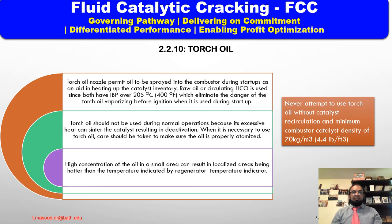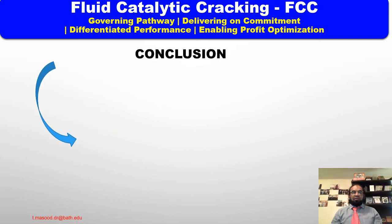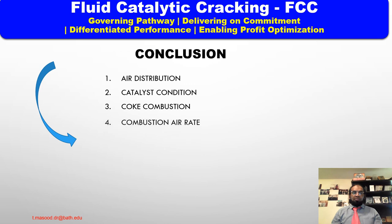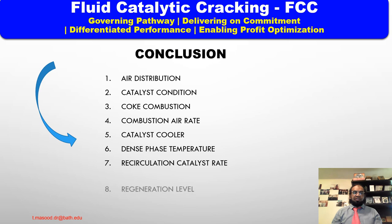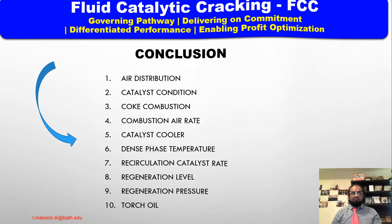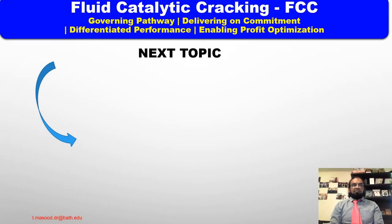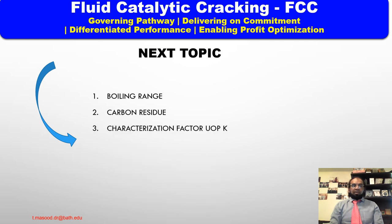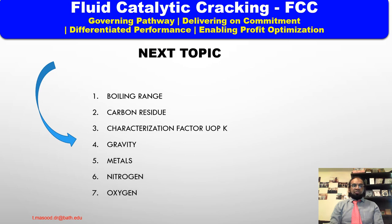In conclusion, we have discussed air distribution, catalyst condition, coke combustion, combustion air rate, catalyst cooler, dense phase temperature, recirculation catalyst rate, regeneration level, regenerator pressure, and torch oil. My next topic will be the quality and condition of the charge stock, covering boiling point, carbon residue, characterization factor (UOPK), gravity, metals, nitrogen, and oxygen.